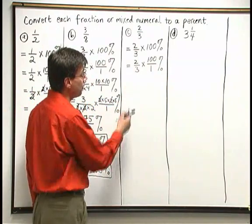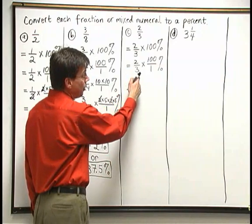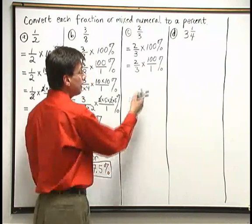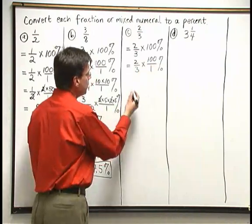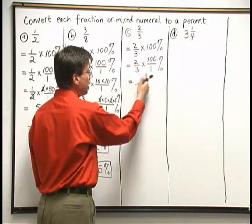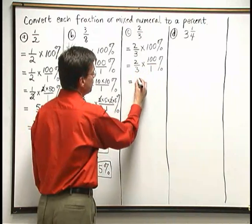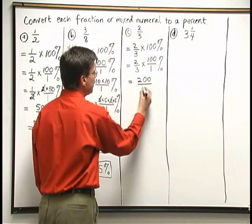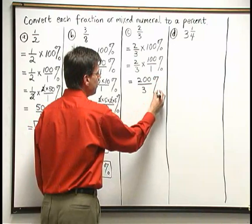Now, 3 doesn't go into 2. And also, 3 doesn't go into 100. I cannot get a factor of 3 out of that 100. So it doesn't do any good here to break down the 100. I'm just going to go ahead and multiply across above and below. 2 times 100 is 200. 3 times 1 is 3. I have 200 thirds percent.